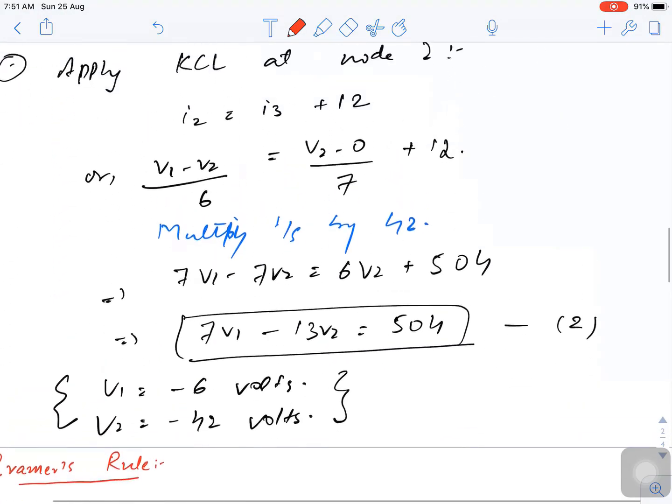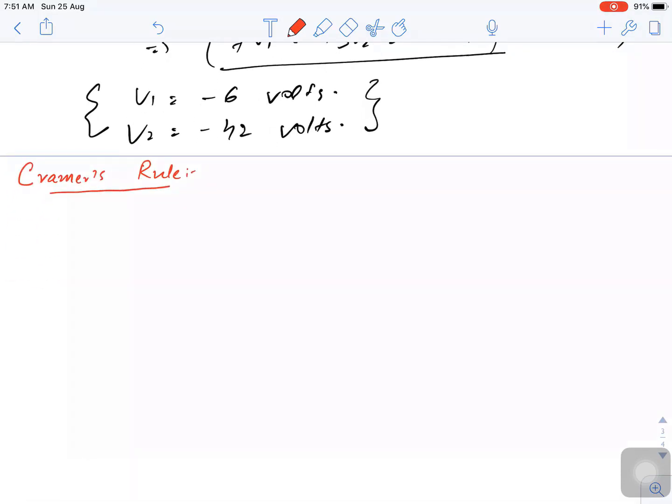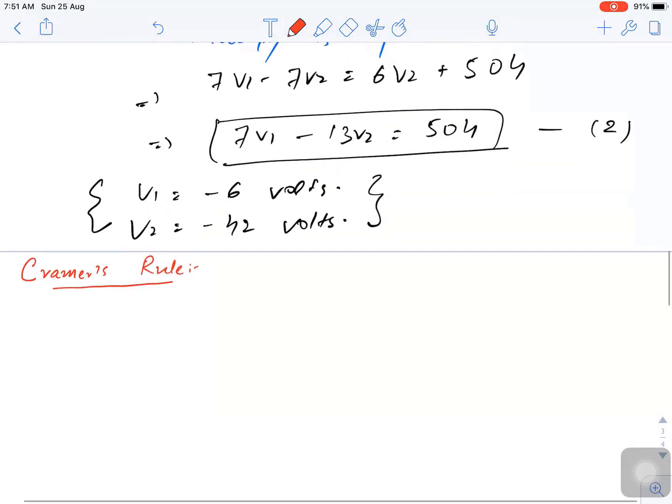At last we had seen from two equations that V1 and V2 are minus 6 and minus 42. Now today I will show you one method called Cramer's rule. This is one of the methods that will help us calculate voltage in a shorter amount of time.